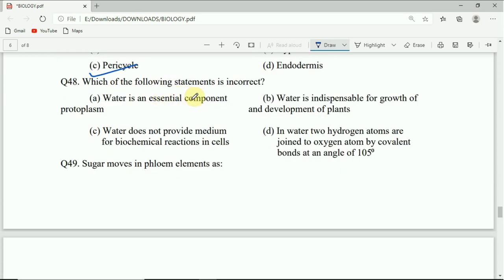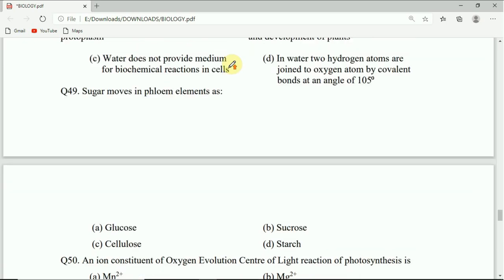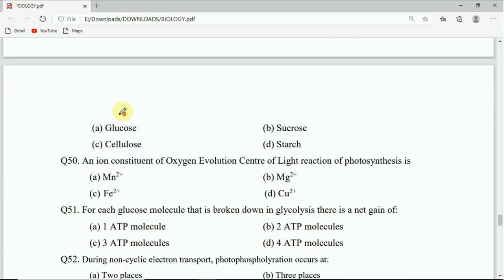Question 48: Which of the following statements is incorrect? Water is an essential component of protoplasm. Water is indispensable for growth and development of plants. Water does not provide medium for biochemical reactions in cells. In water, two hydrogen atoms are joined to oxygen atom by covalent bonds at an angle of 105 degrees. Question 49: Sugar moves in phloem elements as glucose, sucrose, cellulose, or starch. Correct answer is sucrose.